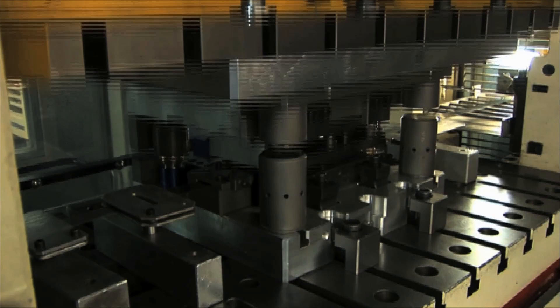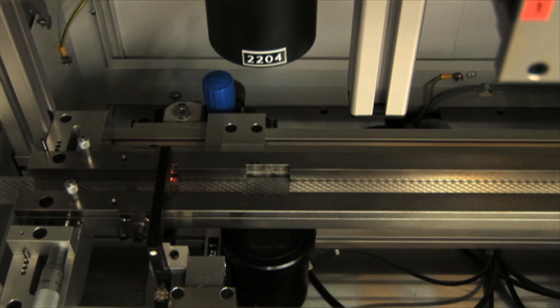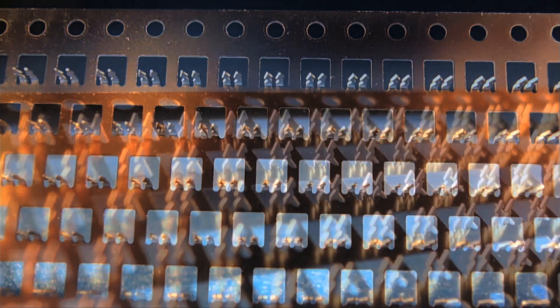A special punching press starts rattling. The heavy plungers hammer into the metal 800 times per second. The result? An elaborately perforated metal strip.